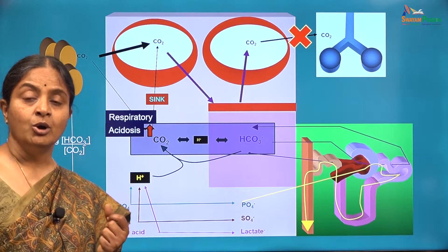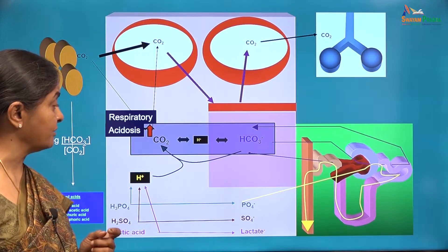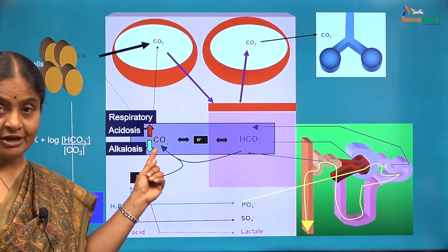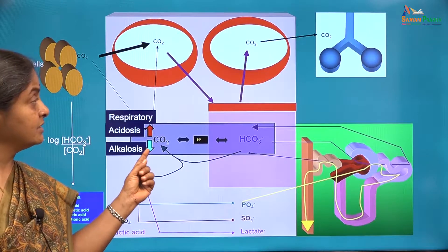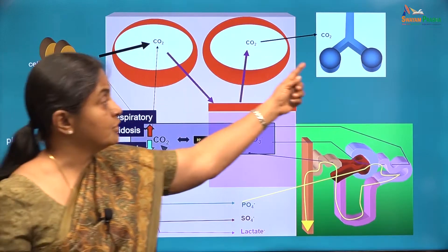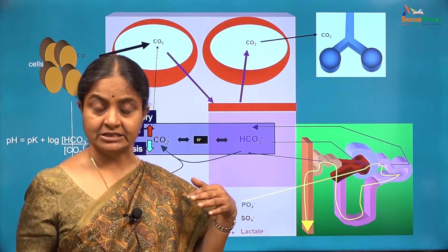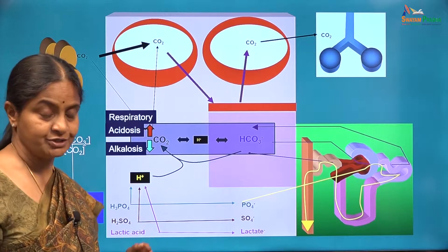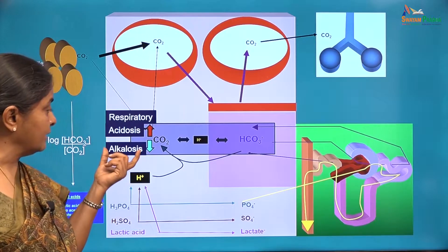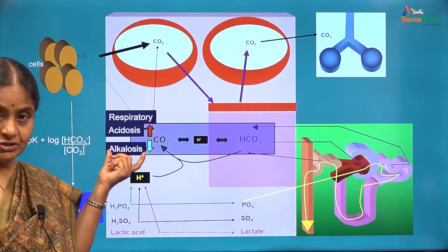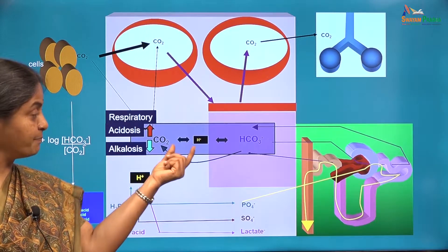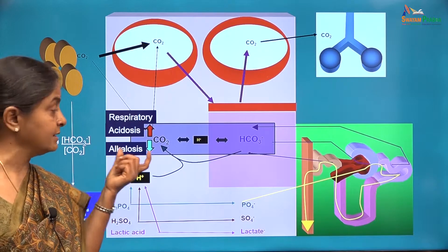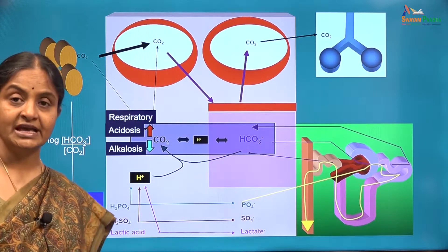The same holds good for a reduction in carbon dioxide in plasma. Any reduction in carbon dioxide in arterial blood is only due to hyperventilation, where the lungs are blowing away more carbon dioxide than is formed in the tissues. Therefore, alkalosis — an increase in plasma pH due to a reduction in plasma carbon dioxide — is termed respiratory alkalosis.